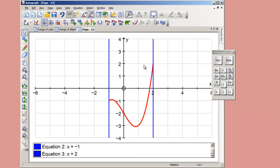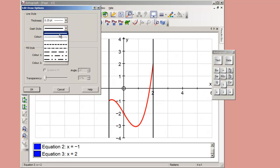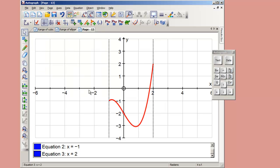What we could do is select these two, right-click, edit the draw options, and make them dotted.